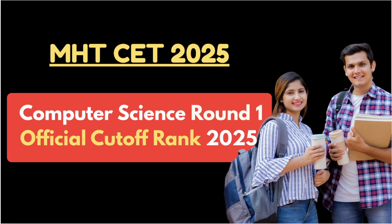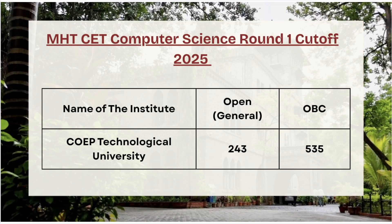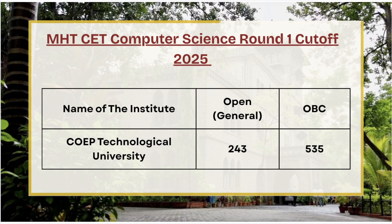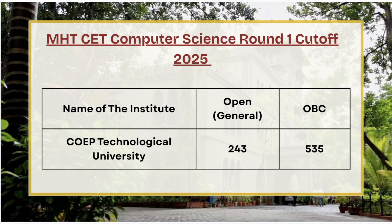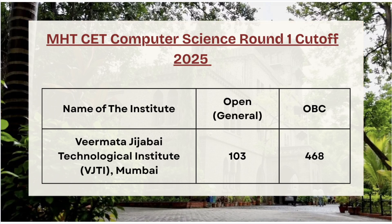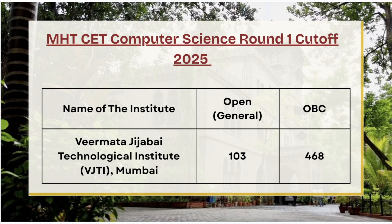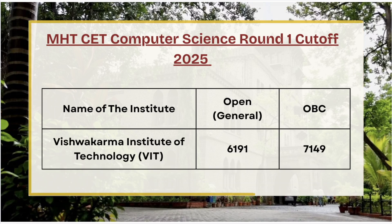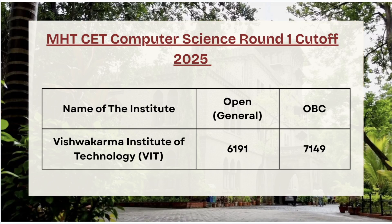First in the list we have COET Pune. For open general category the cutoff rank is 243, and for OBC the cutoff rank is 535. Next in the list we have VJTI Mumbai. For open category the cutoff is 103, and for OBC category the cutoff is 468.